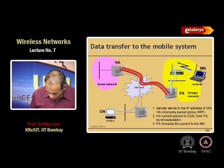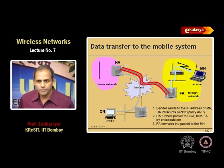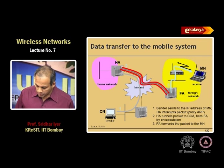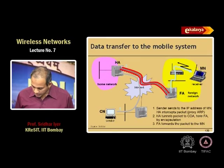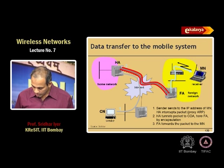CN stands for correspondent node. CN is going to send data to the mobile node — the correspondent node does not need to know that the mobile node has moved. So it sends data to the original network. The home agent captures this packet, puts it in another envelope — which is the red thing you see here — and tunnels that packet to the foreign agent. The foreign agent removes the encapsulation and gets back the original packet, which is then sent to the mobile node.